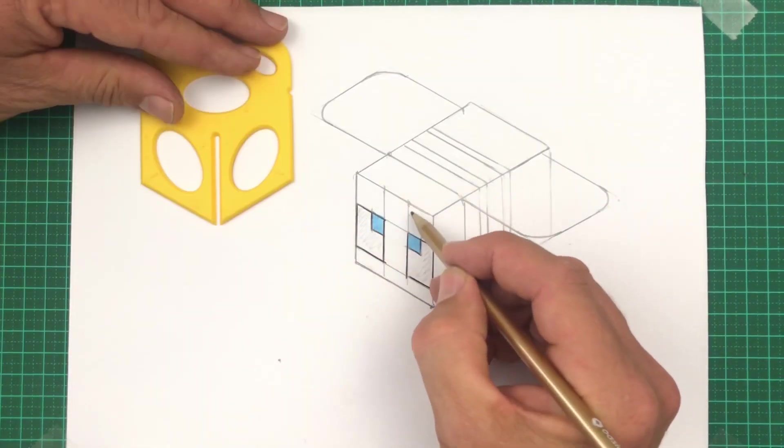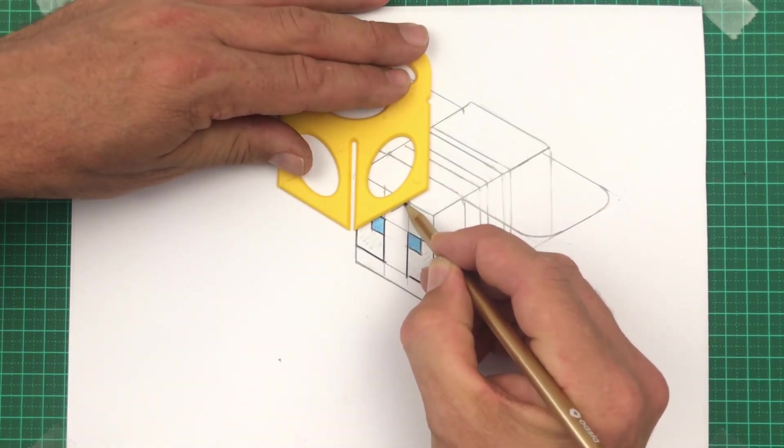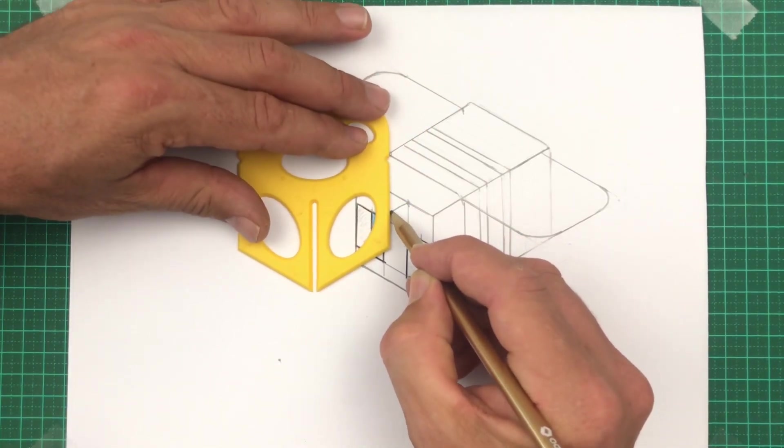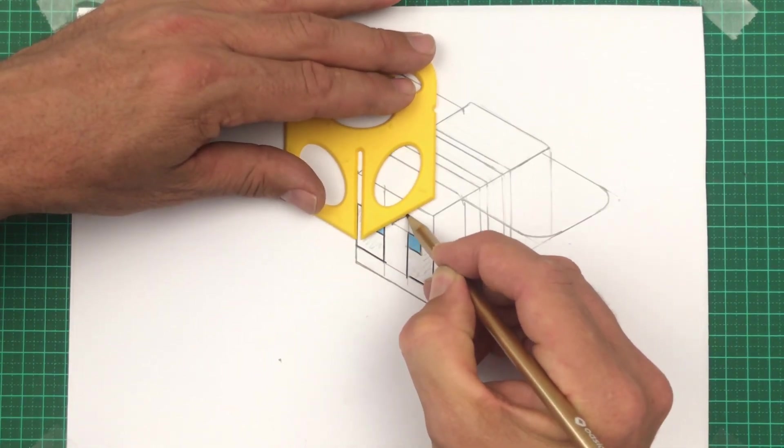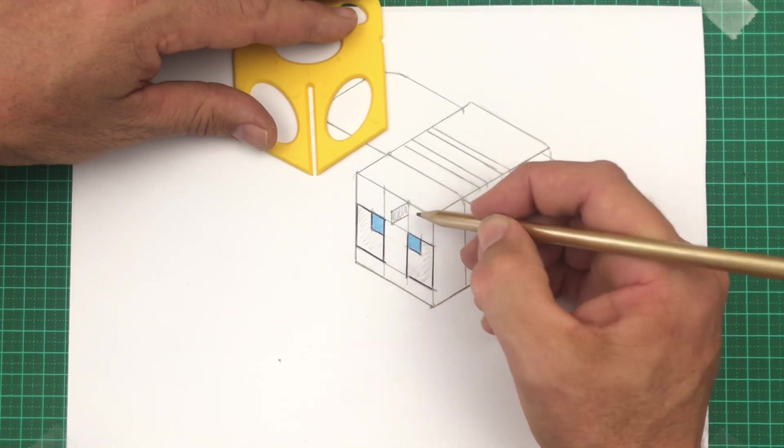To finish off, we're going to draw some antennae just here. From the starting point, come forwards. And from the end of that line, drop down, not so long there. And to return back, we use the same angle. I'm going to color that in dark later.